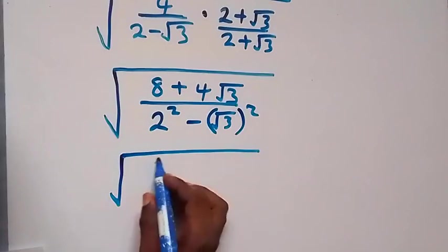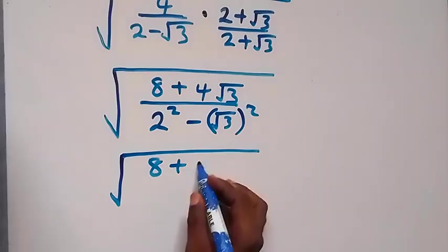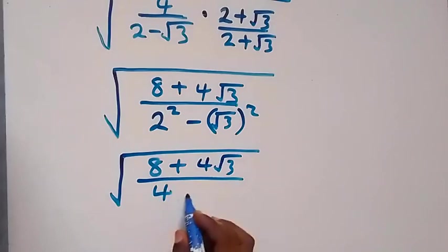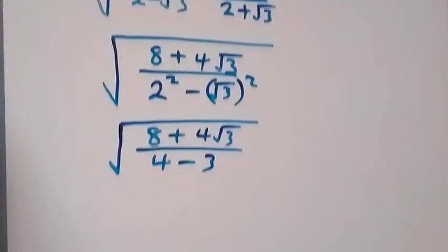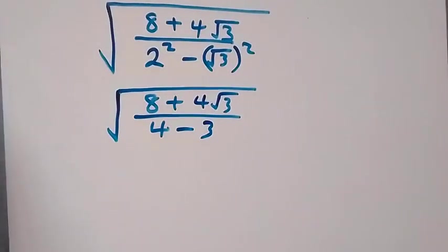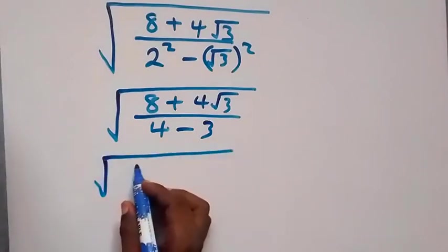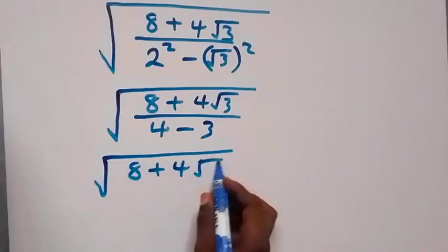Then from here, this is same thing as square root of 8 plus 4 root 3, then divided by we have 2 squared as 4, then minus here square root cancels square root of 3.